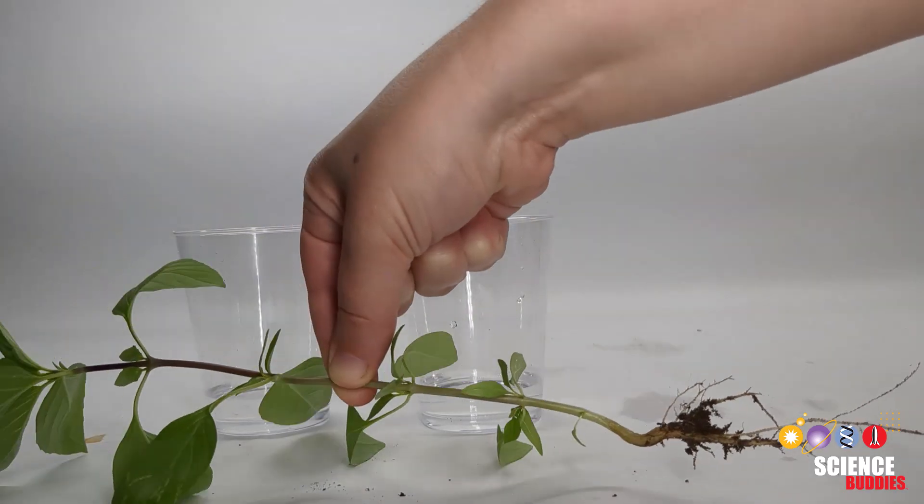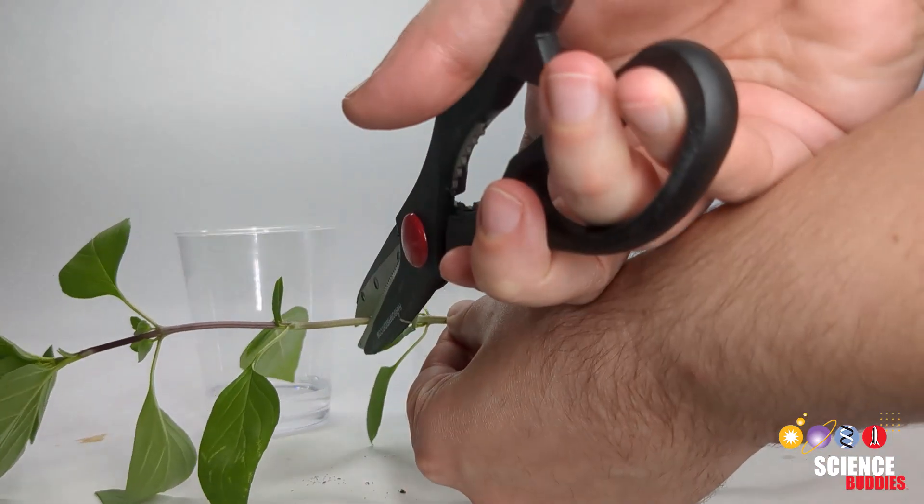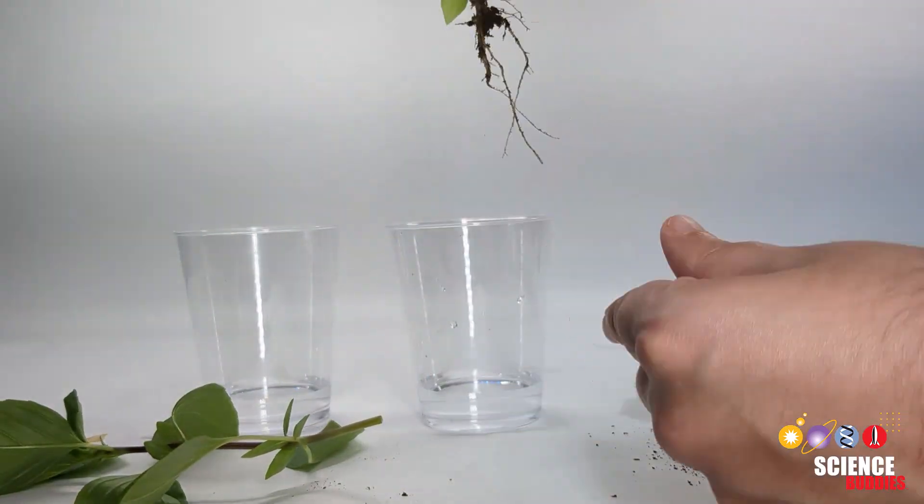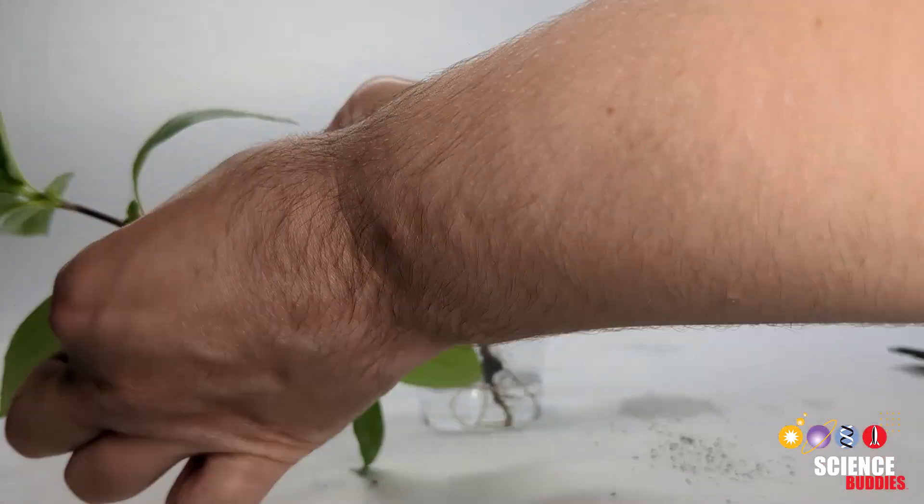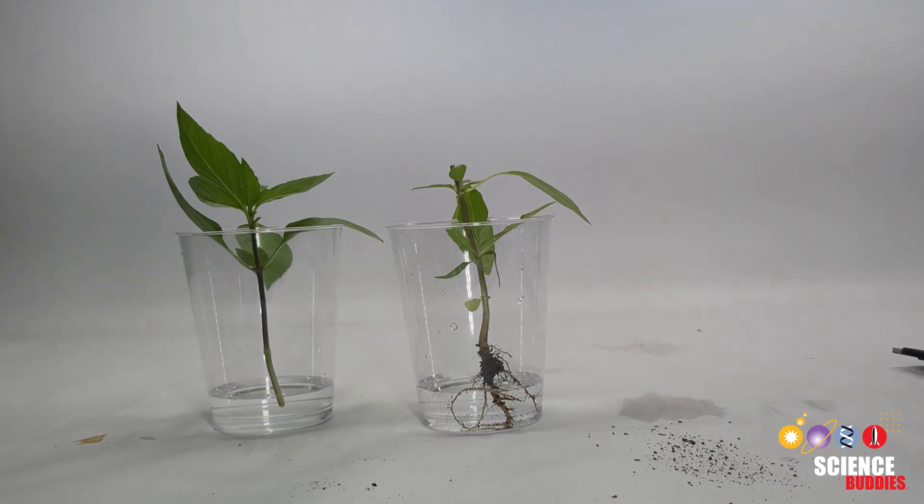Similarly, we can test the regenerative capacity of other plants, such as a basil plant, by cutting it into a top half and a bottom half, or you could even cut it into multiple segments.